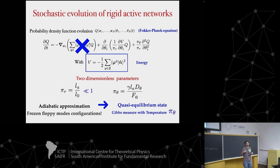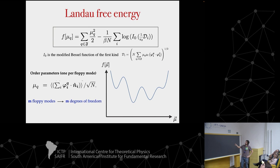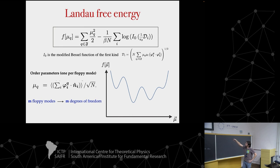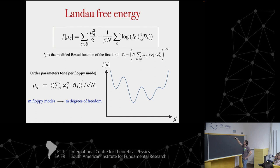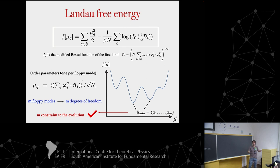We find a classical equilibrium-like state that can depend on the floppy mode configuration. We can write a Landau free energy depending on the order parameter — translational (just the polarization), rotational (the angular momentum), or others — plus terms coupling the different floppy modes. Since this term depends on the floppy mode configuration and is evolving, it is an adiabatic approximation. At each point you find the minima of the free energy, which sets the value of the order parameter and the constraints the system follows.